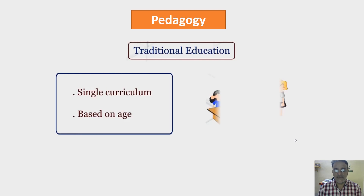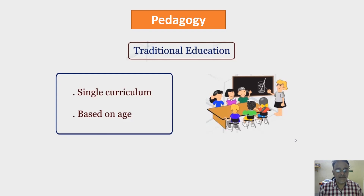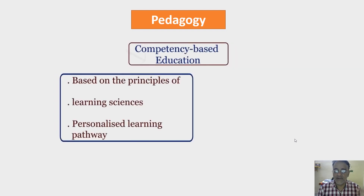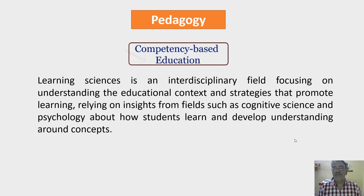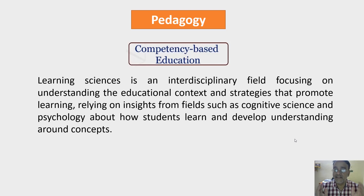In the traditional system, a single curriculum is delivered to all students based on their age. In competency-based education, it is based on the principles of learning sciences and personalized learning pathways. Learning sciences is an interdisciplinary field focusing on understanding the educational contexts and strategies that promote learning, relying on insights from fields such as cognitive science and psychology about how students learn and develop understanding around concepts. For example, in CBE, classroom instruction integrates research on how students learn and process information and what kinds of learning environments support effective learning.